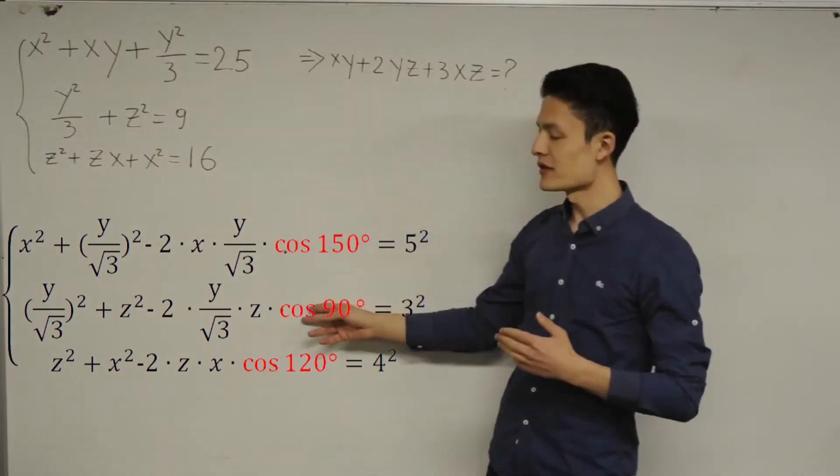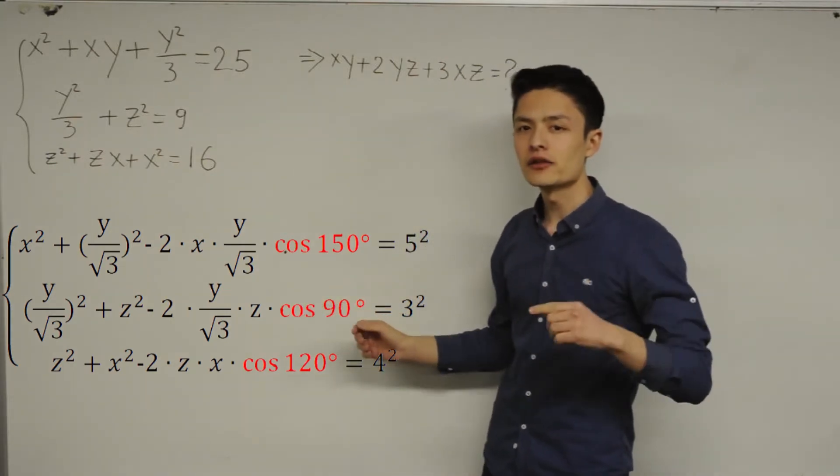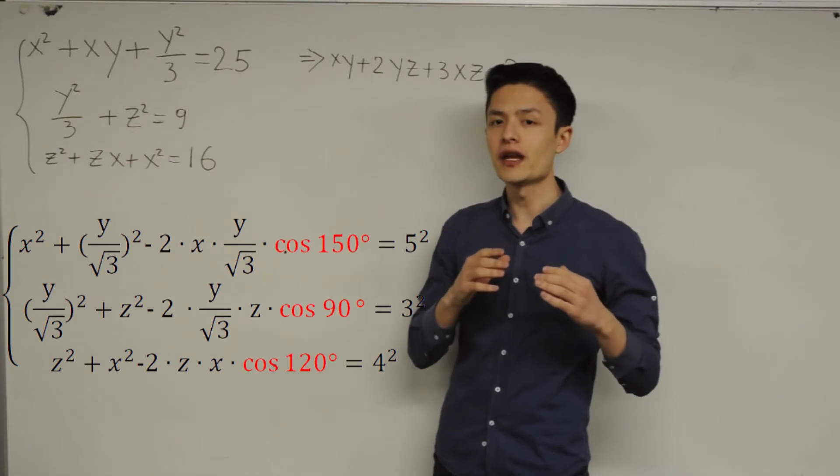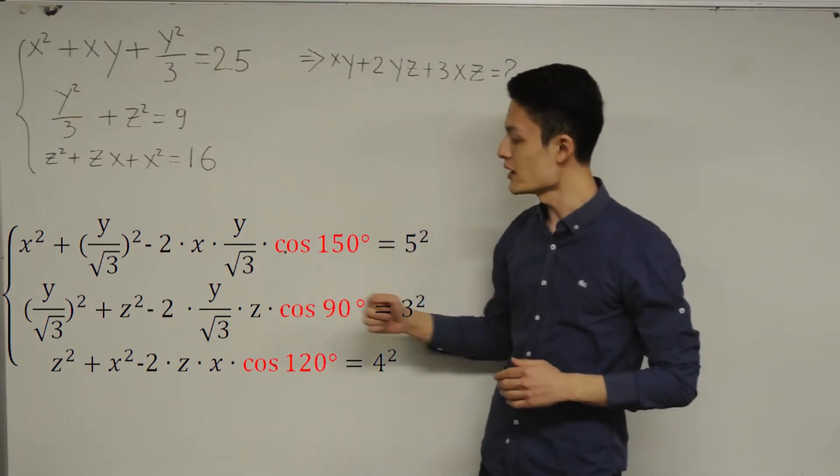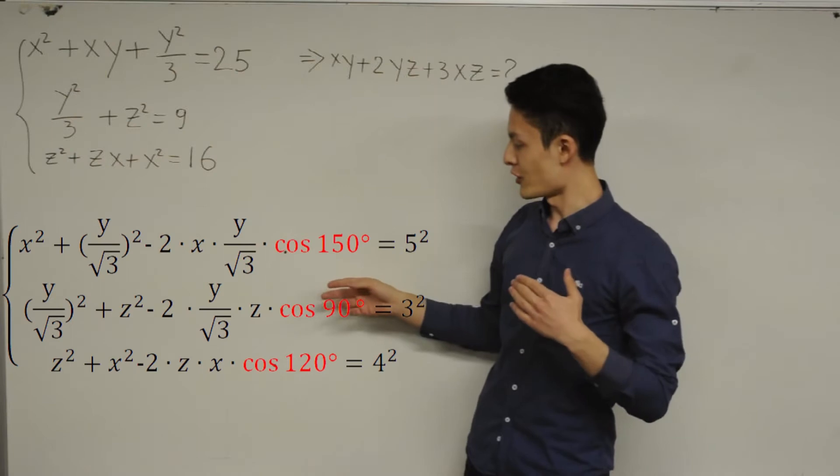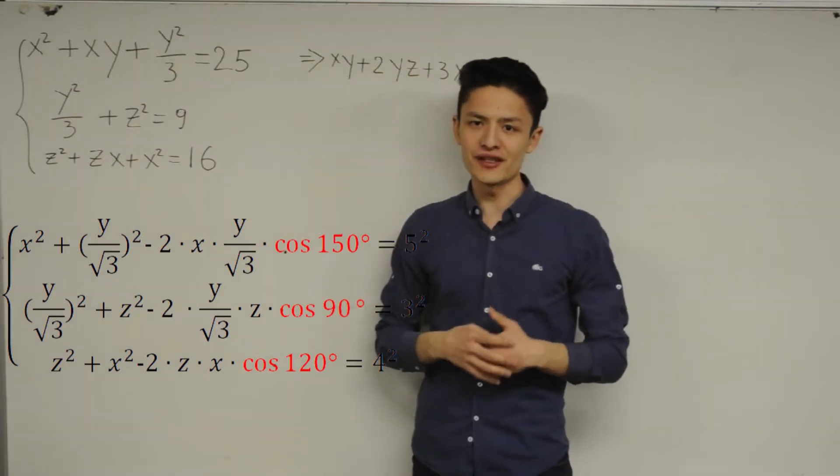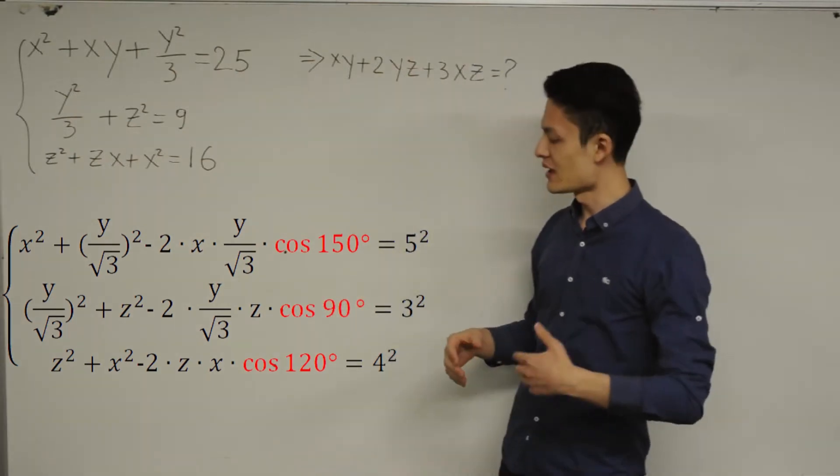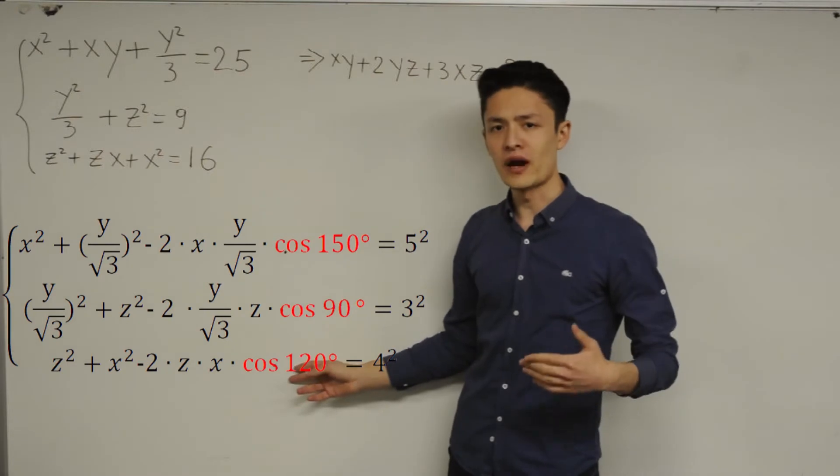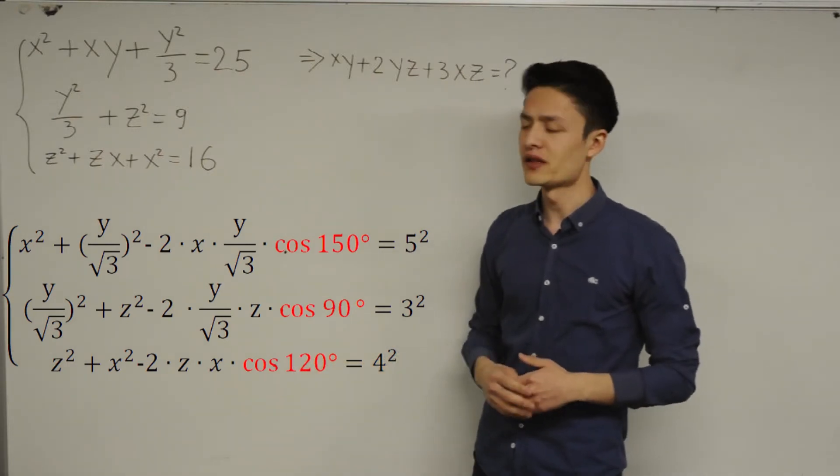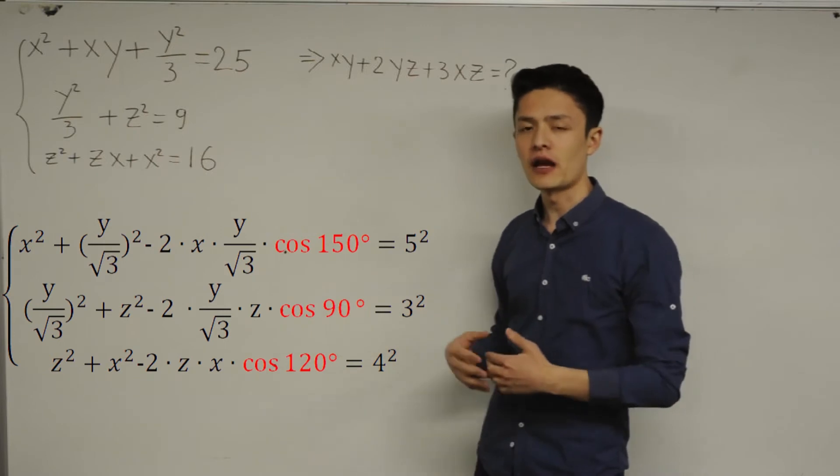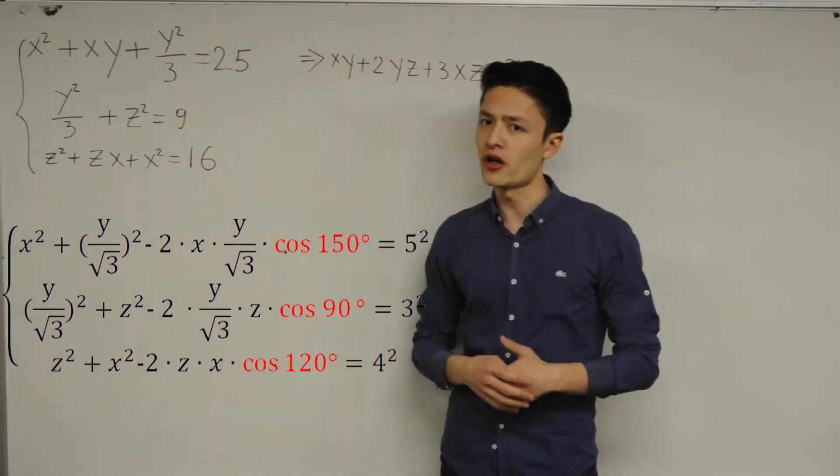So instead of minus root 3 divided by 2, we can write cosine 150. And now, we do the same thing in the second line. So the value is 0 here. So cosine 90 is equal to 0. So here, we can write cosine 90 instead of 0. And now, lastly, we do the same thing again. So instead of minus 1 over 2, we can write cosine 120. So we have all these values from trigonometry.